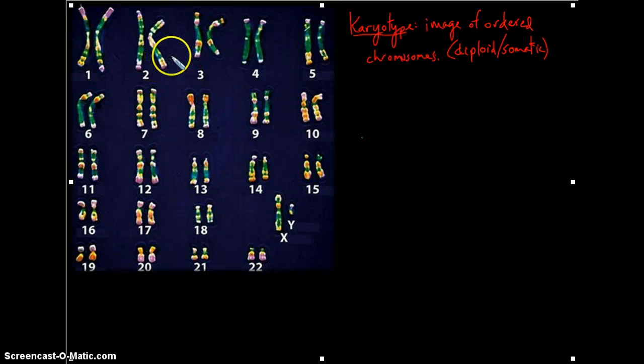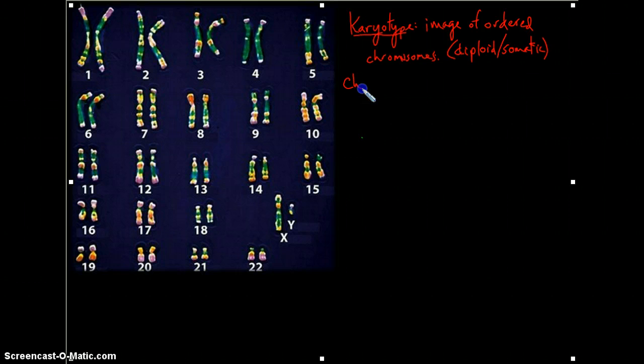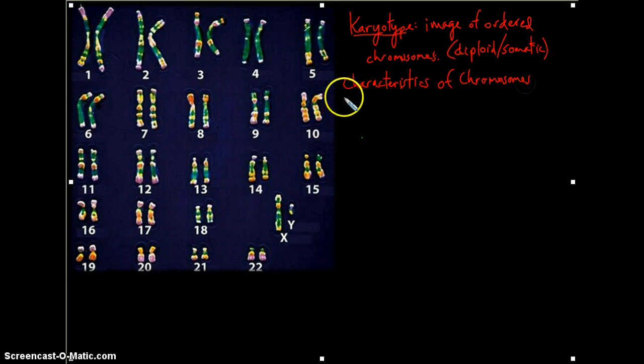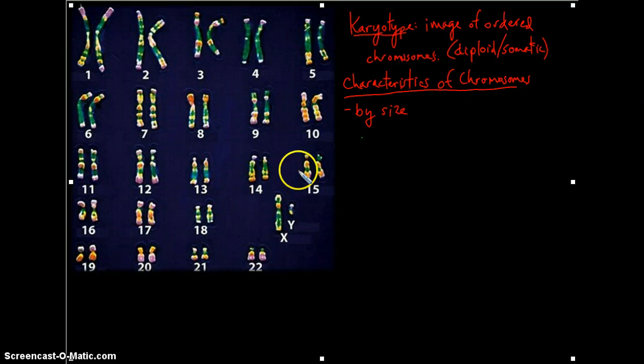We get these highly condensed chromosomes and then we simply pair them up. One of the characteristics of chromosomes you may notice by looking at this image is that they will vary by size. Some contain a lot more DNA than others.